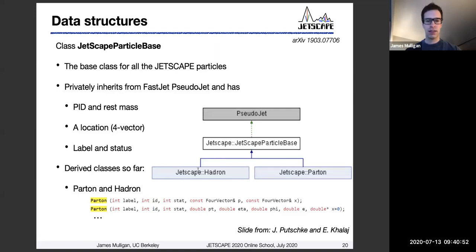And so there are a couple of derived classes for this. There's a hadron class, there's a parton class. And there are particular ways if you want in your module to create a new parton, for example, you can have a look at these specific ways of how to create a particle from some simple arguments.